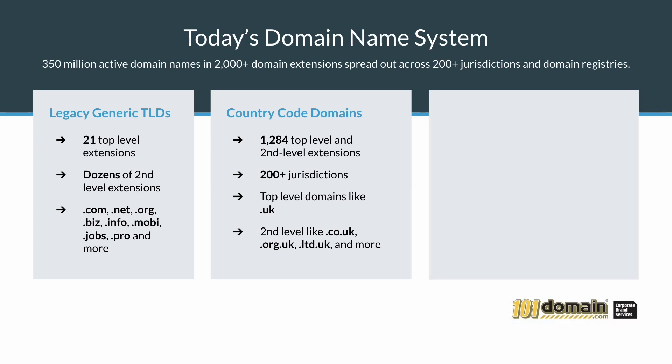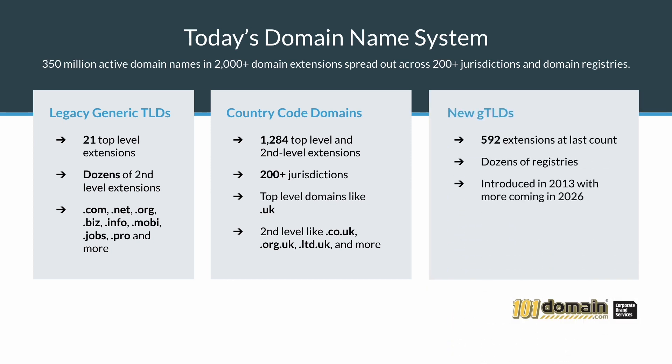Next are new GTLDs. At last count, there are 592 domain extensions that have been made available to the public starting in 2013. A new round will begin in 2026 and will include hundreds more.